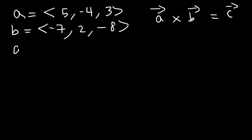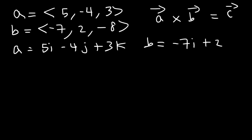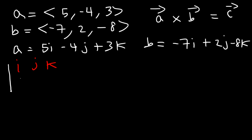If you see it in component form, just keep in mind A is the same as 5i minus 4j plus 3k, and B is negative 7i plus 2j minus 8k. The work is going to be the same. Let's write this in a 3 by 3 matrix: i, j, k in the first row; then vector A in the second row as 5, negative 4, 3; and vector B in the third row as negative 7, 2, negative 8.